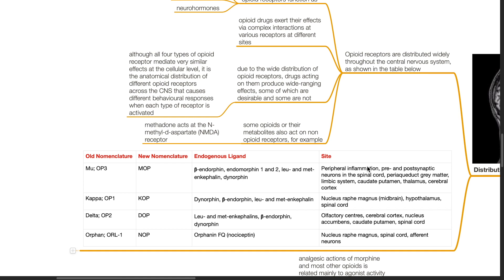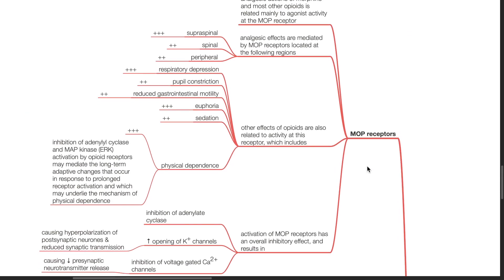Some opioids or their metabolites also act on non-opioid receptors. For example, methadone acts at the NMDA receptor. Cellular effects.